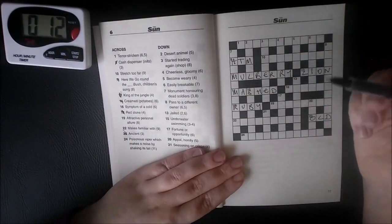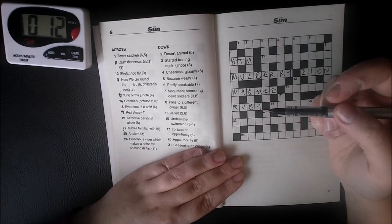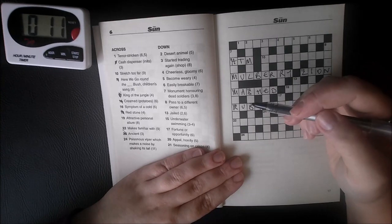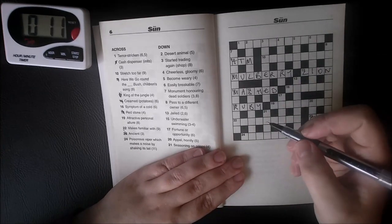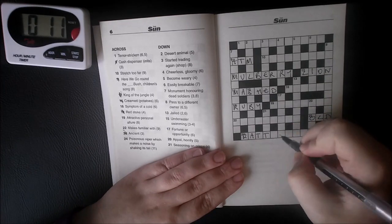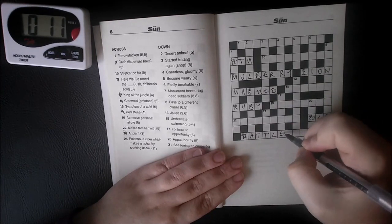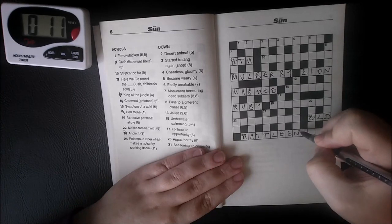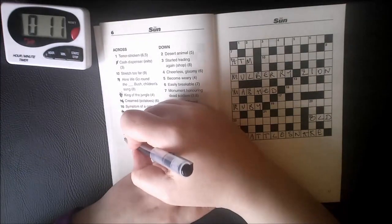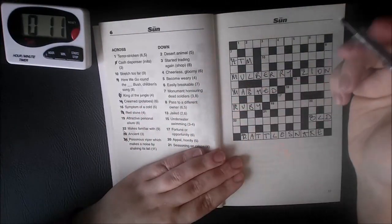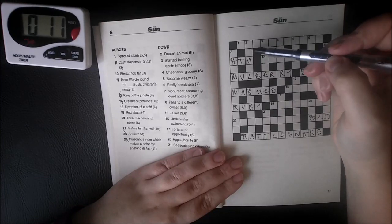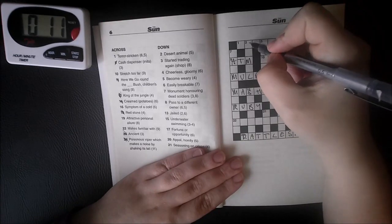Poisonous viper which makes a noise by shaking its tail. It's a rattlesnake. That's my impression of a rattlesnake. R-A-T-T, R, rattlesnake. Desert animal: camel? Camel.